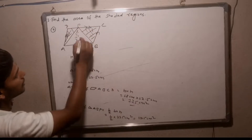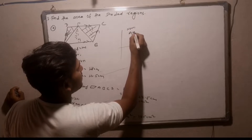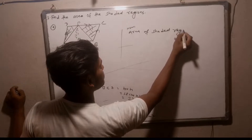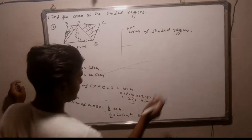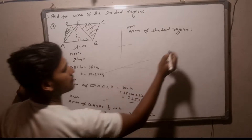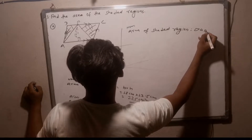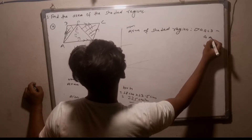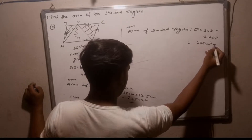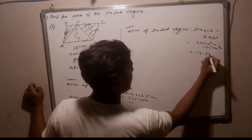Now, area of shaded region. Area of shaded region equals area of parallelogram minus area of triangle. Area of parallelogram ABCD minus area of triangle ABP. 225 cm² minus 112.5 cm². The same thing is 112.5 cm².